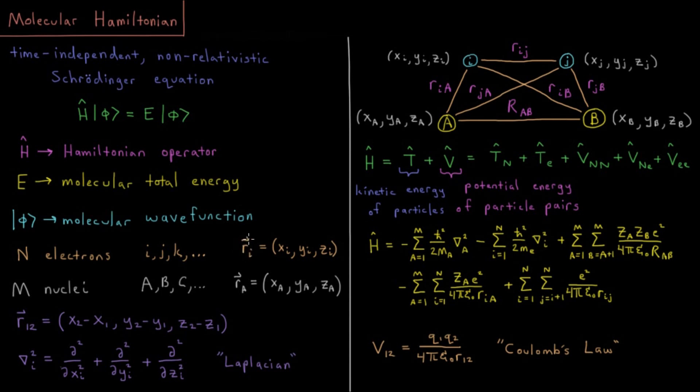We're almost always working in three-dimensional Cartesian space, so that would be xi, yi, zi. The x, y, and z components of that electron's position represent its position vector.